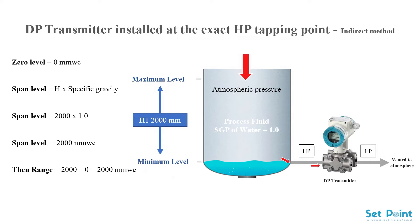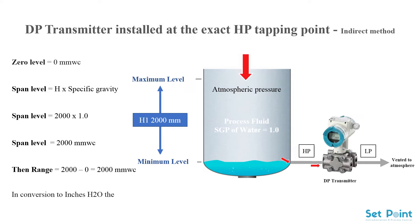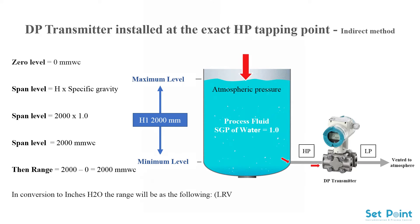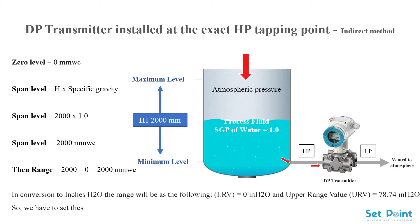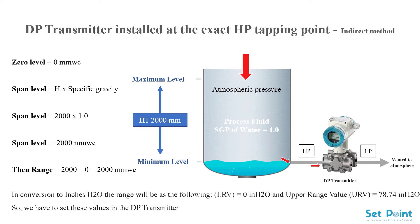So the range equals 2000 minus 0, which equals 2000 millimeters water column. In conversion to inches H2O, the lower range value equals 0 in H2O and the upper range value equals 78.74 in H2O. We may now set these values in the DP transmitter.